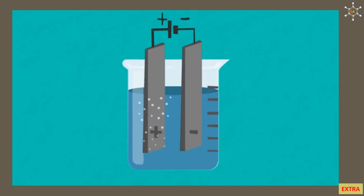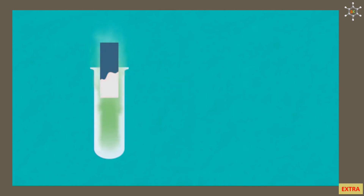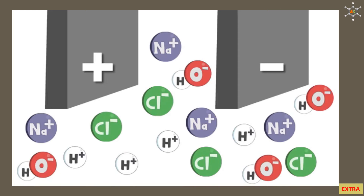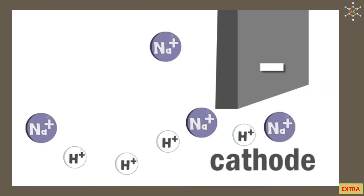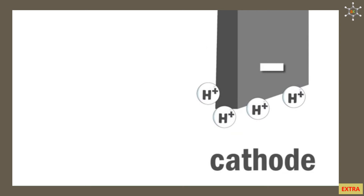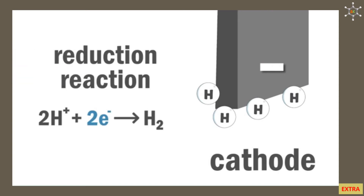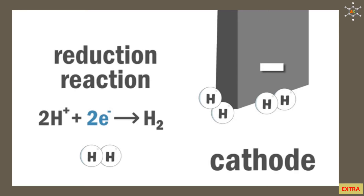The chlorine gas bubbles up to the surface. If collected in a test tube, you can see its pale green color. It turns damp blue litmus paper red (showing it is acidic) and then bleaches it. At the cathode, hydrogen ions each gain an electron to form hydrogen atoms, which bond in pairs to form diatomic hydrogen gas (H2).